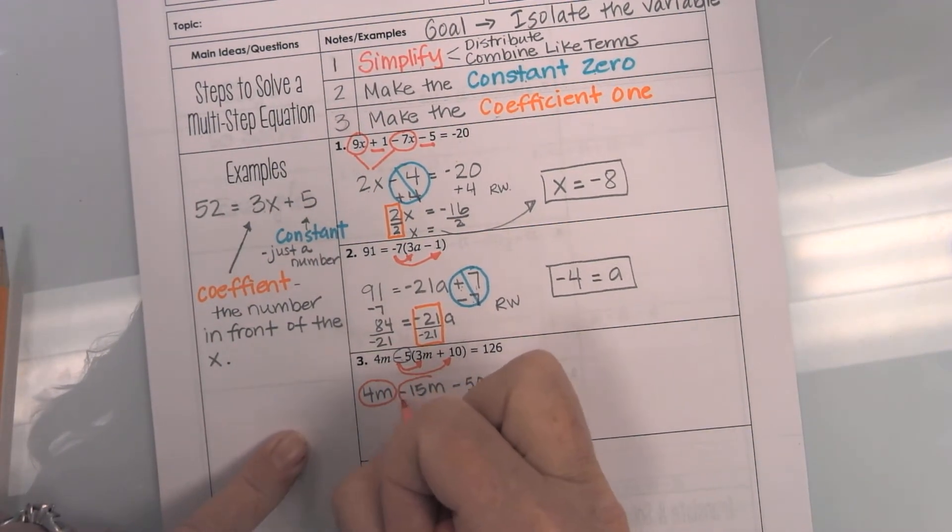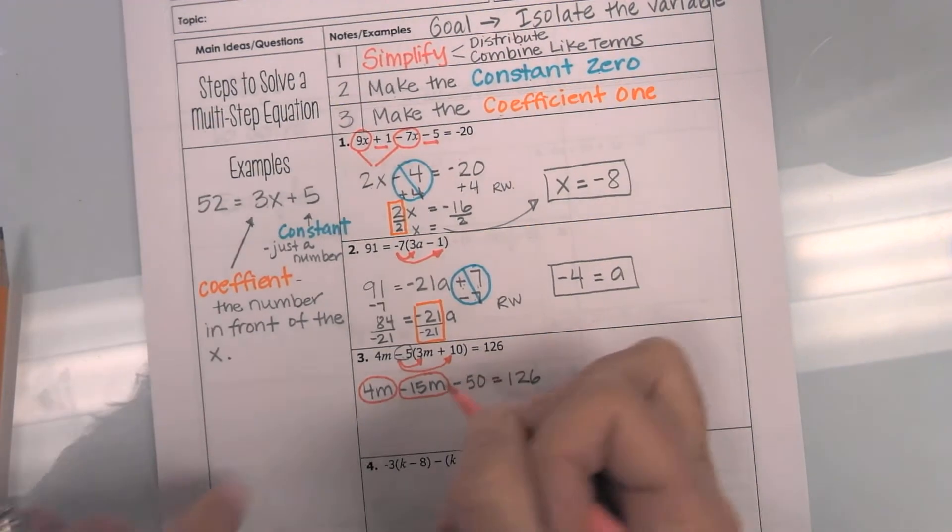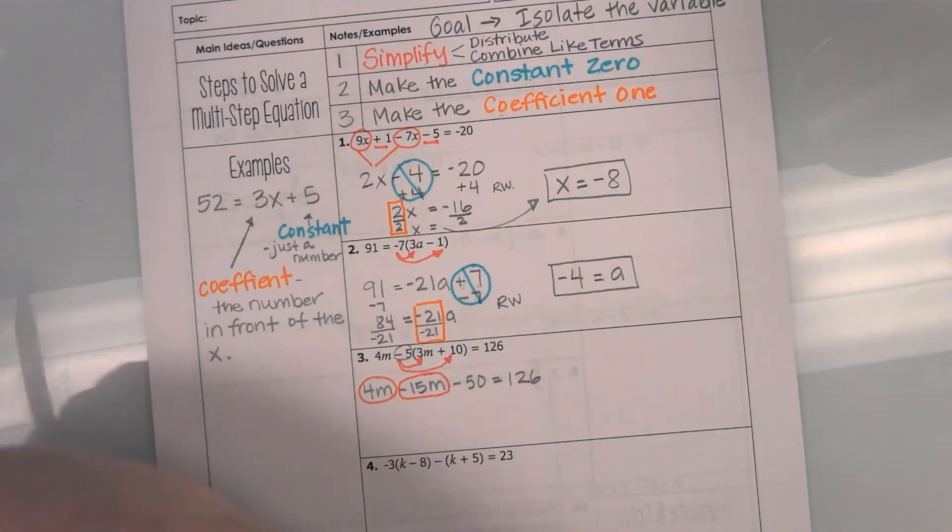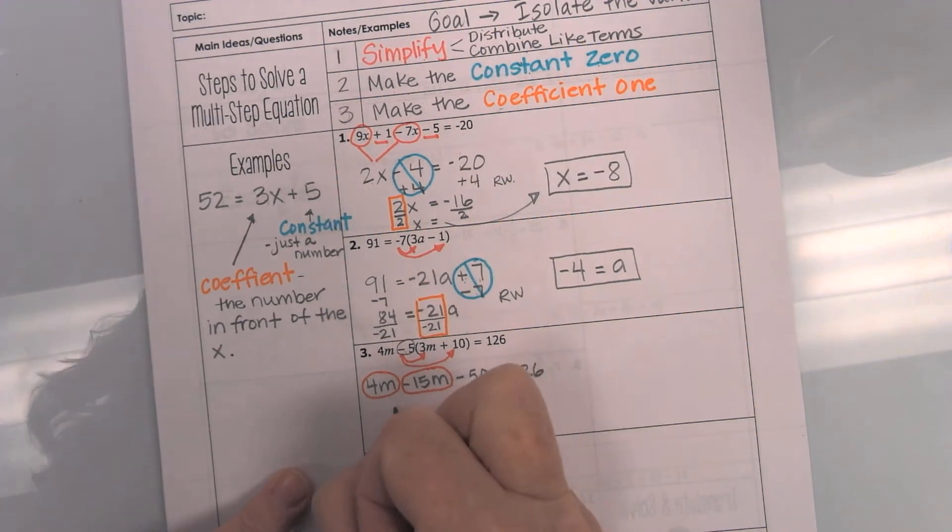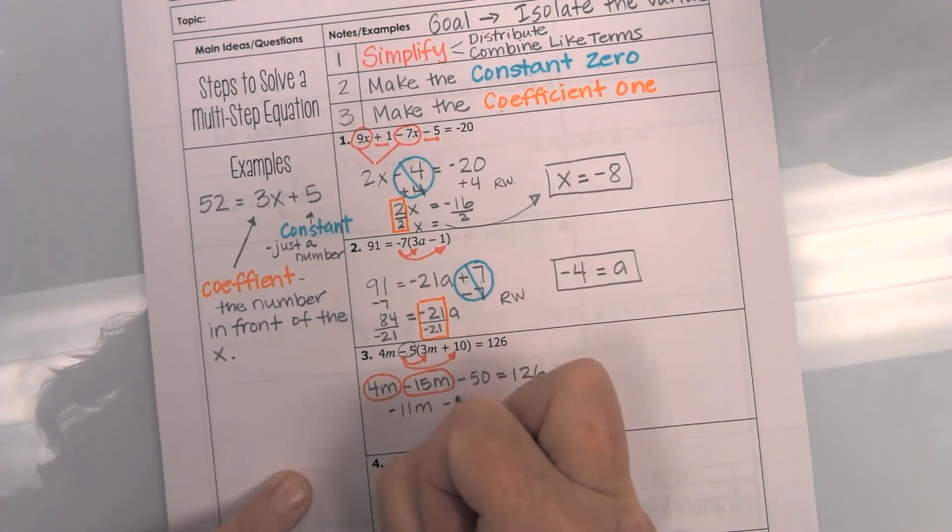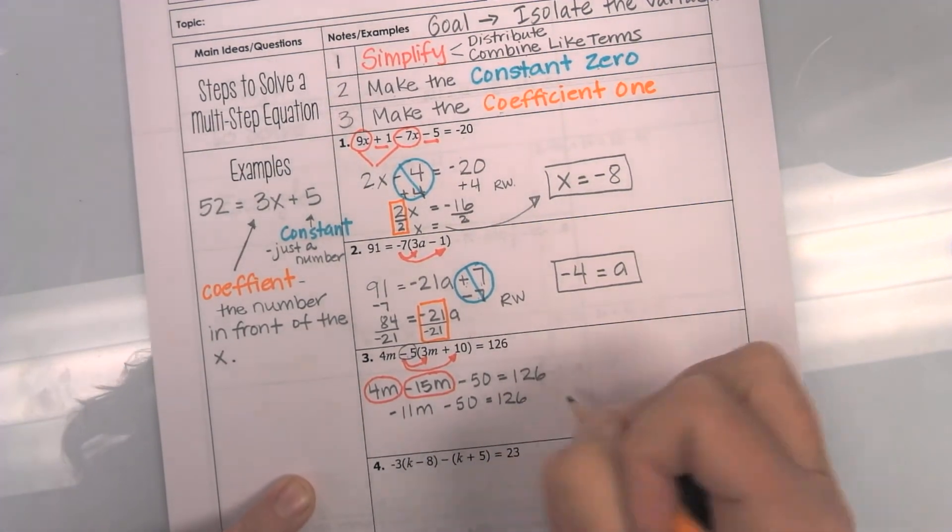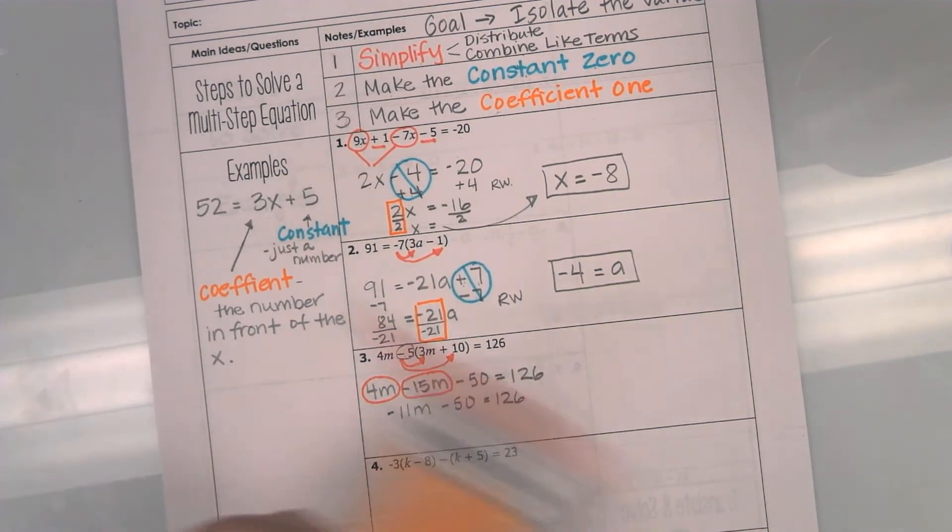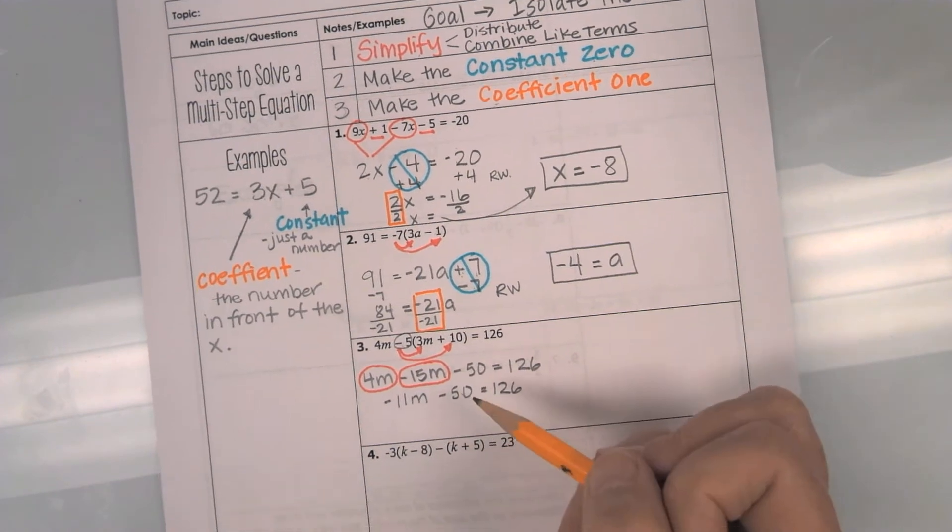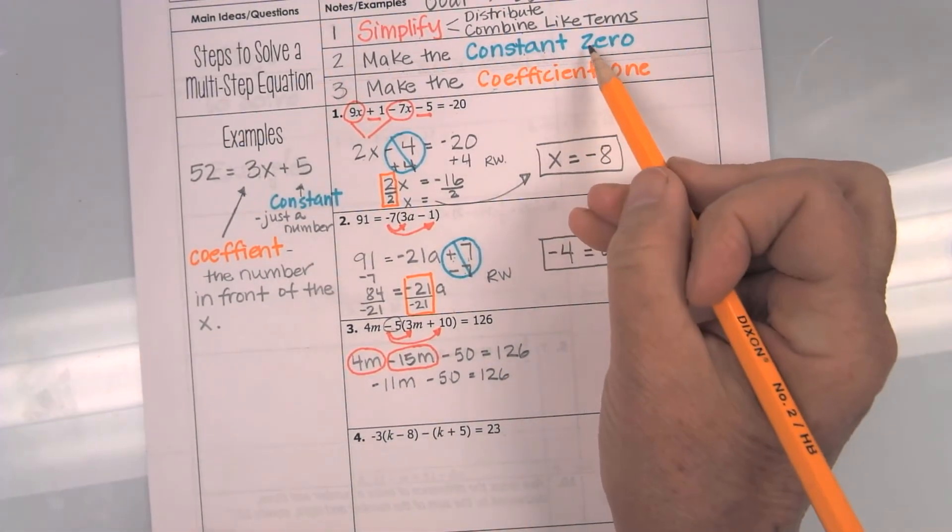and so I am going to go ahead and bring those together. I am going to be left with a negative 11m minus 50 equals 126. Remember, always rewrite. Okay, done with simplifying. Now, we need to make the constant 0.